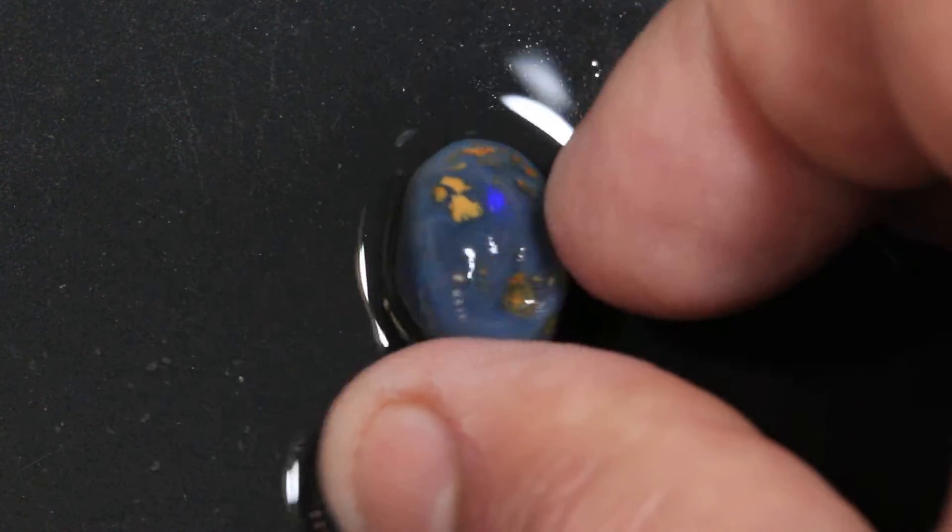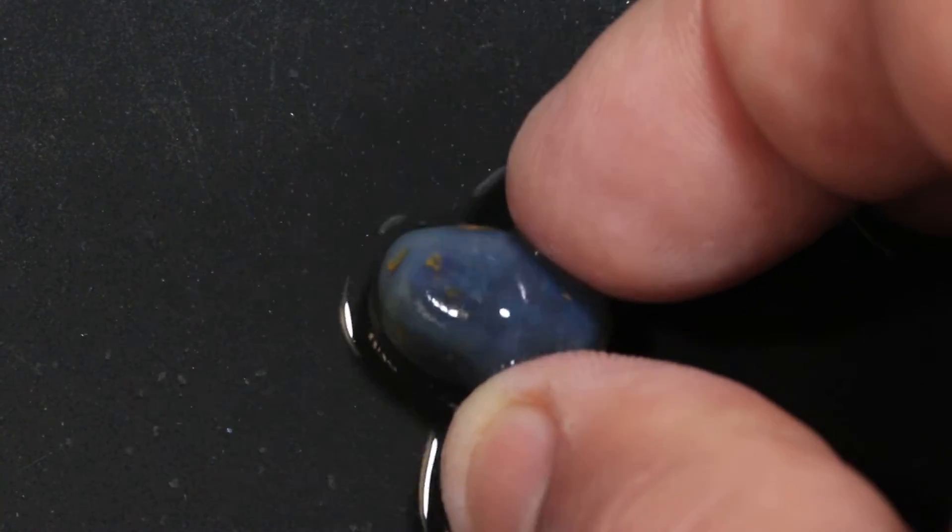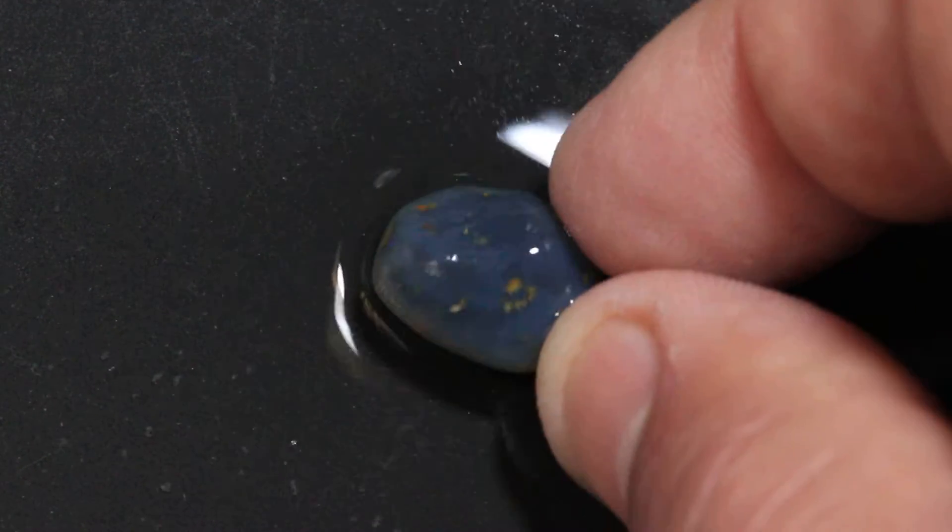It looks like it's a black knobby with crystal opal all the way around it. It's got reds and greens.